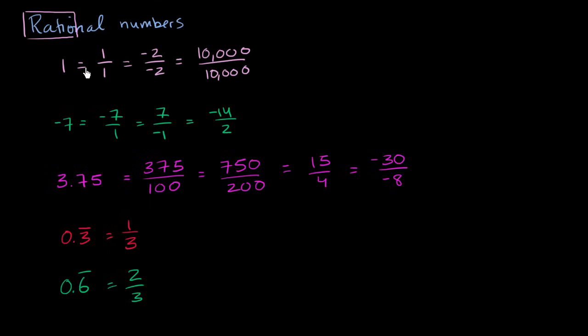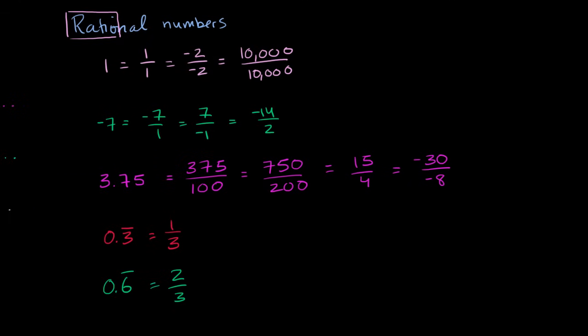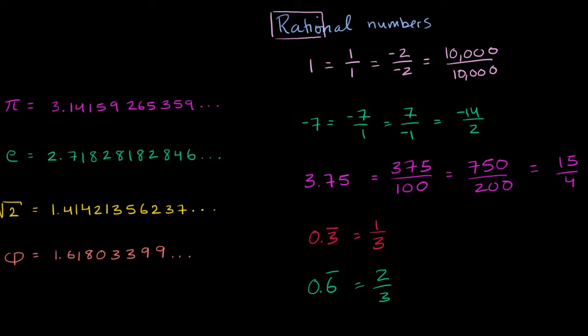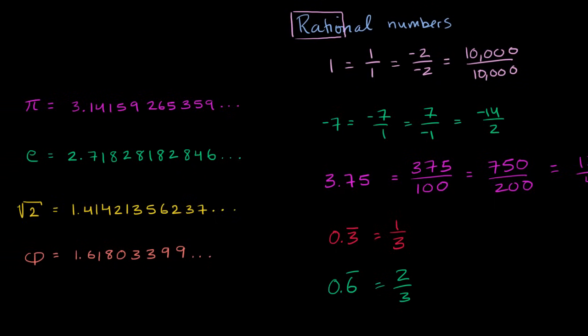And you're probably guessing that there are. Otherwise, people wouldn't have taken the trouble of trying to label these as rational. And it turns out, as you can imagine, that actually some of the most famous numbers in all of mathematics are not rational. And we call these numbers irrational.